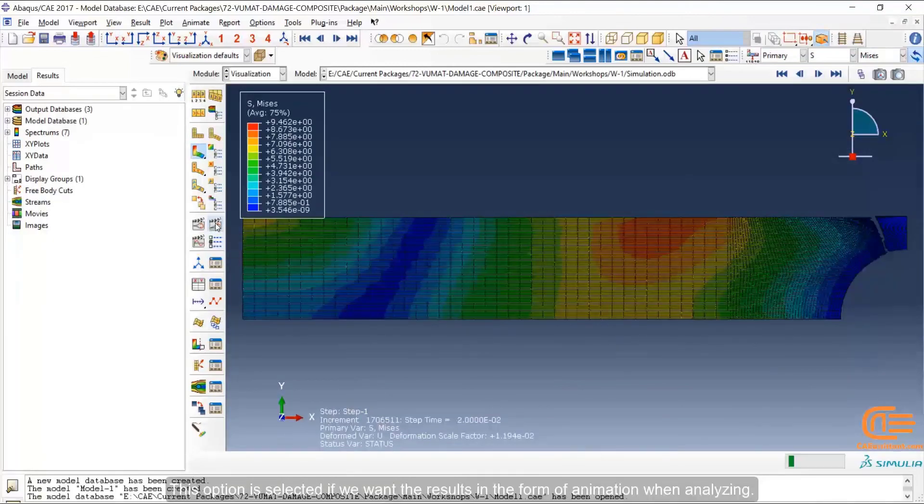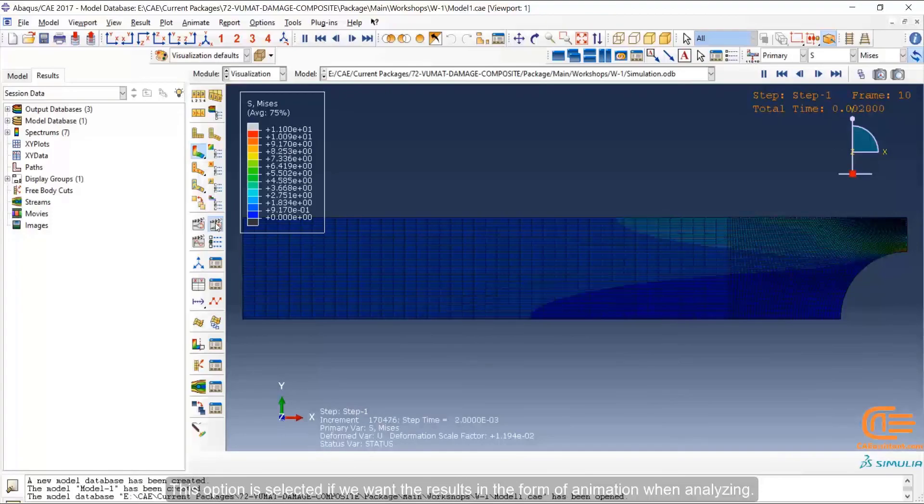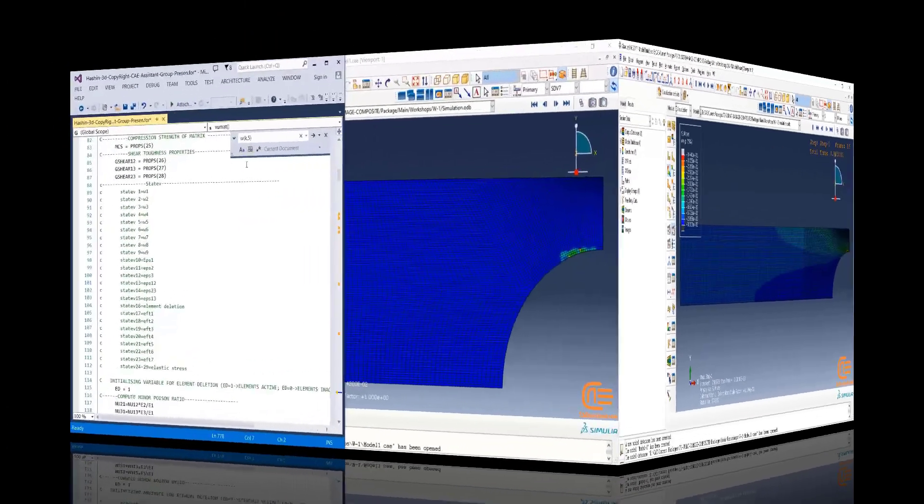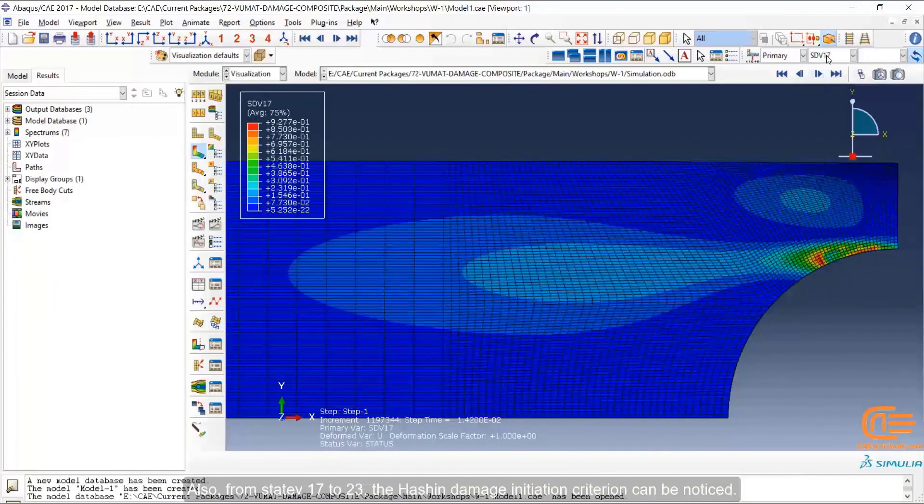This option is selected if we want the results in the form of animation when analyzing. Also, from state V17 to 23, the Hashin damage initiation criterion can be noticed.